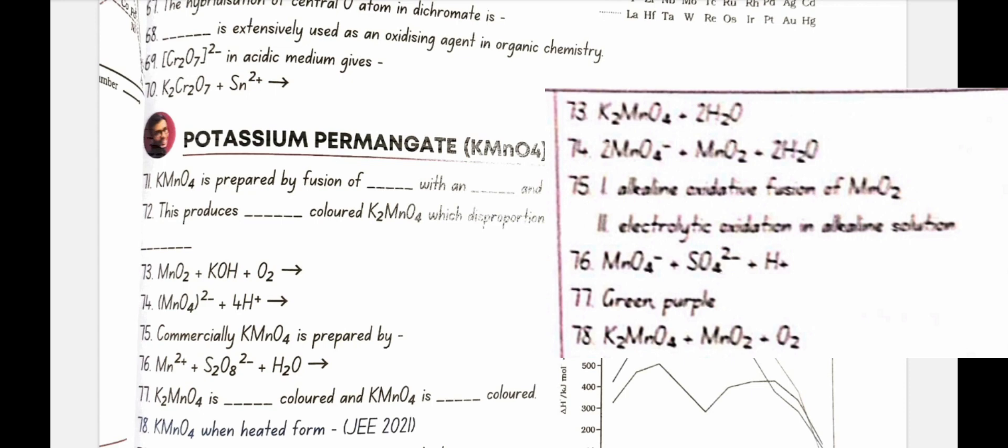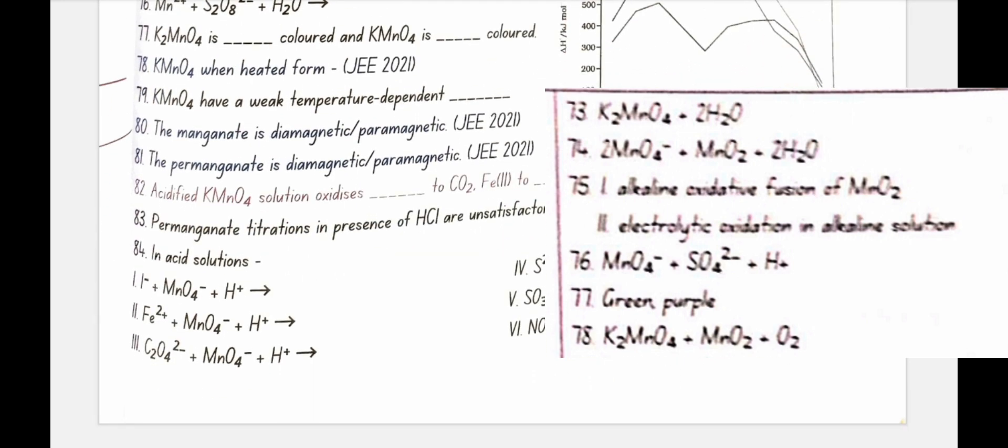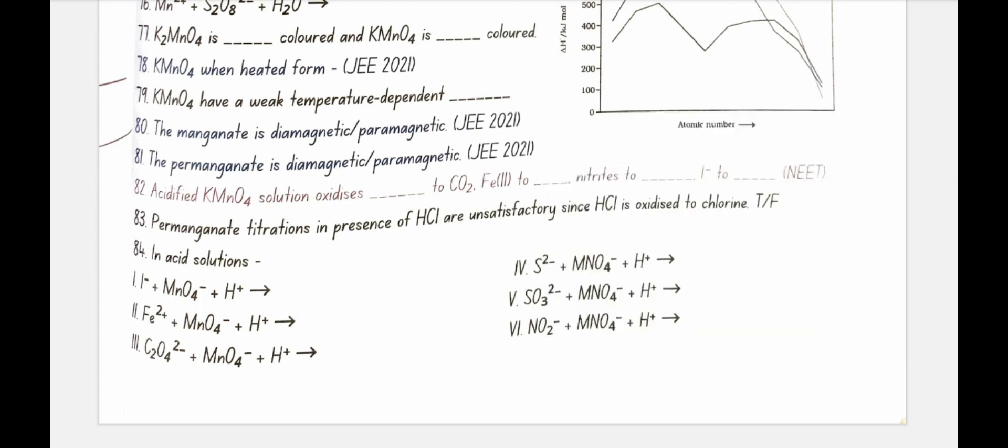Mn2 plus plus S2O8 2 minus plus H2O gives MnO4 minus plus SO4 2 minus plus H+. K2MnO4 is green colored and KMnO4 is purple colored. KMnO4 when heated form K2MnO4 plus MnO2 plus O2.